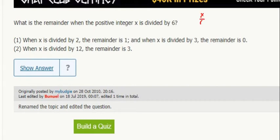So remainder when x is divided by 6. When x divided by 2, the remainder is 1. The remainder is 0 when we divide by 3. So it's a multiple of 3, and it's one more than a multiple of 2.